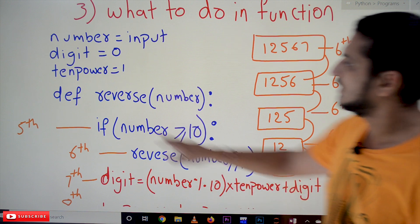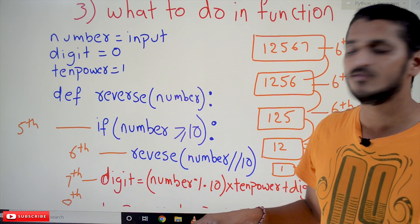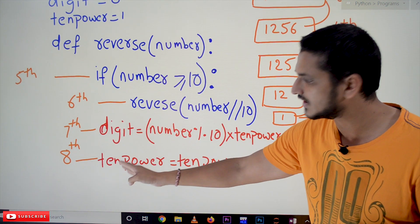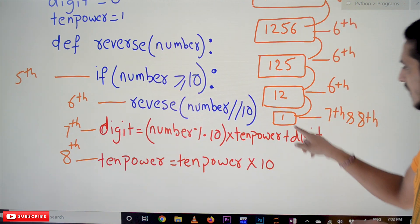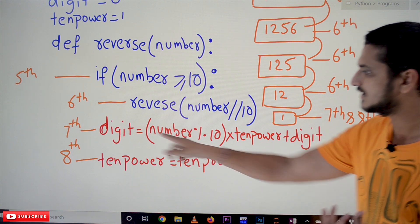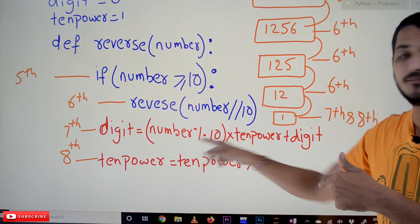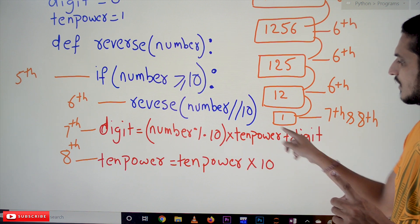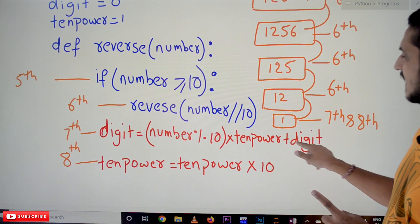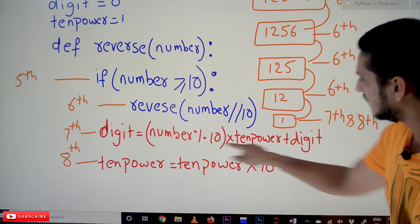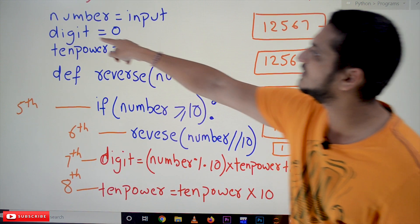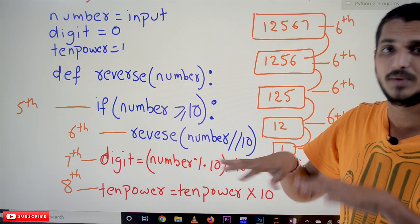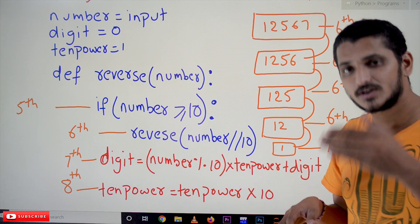The function with local variable 1: if 1 >= 10 — no, condition fails. It jumps to lines 7 and 8. Line 7: digit = 1 mod 10 = 1; 1 * 10_power (which is 1) + digit (which is 0) = 1. So digit is updated to 1. Line 8: 10_power = 10_power * 10 = 10. The next function that uses these global values will see digit=1 and 10_power=10.